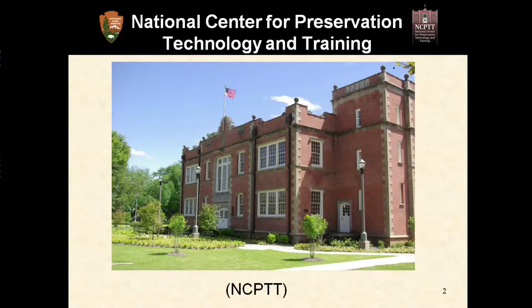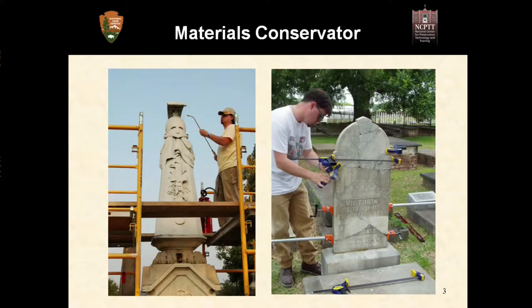The presentation today is coming from NCPTT — the National Center for Preservation Technology and Training. We are a cultural research and training office for the National Park Service. We don't look at fuzzy bears and bald eagles; we're interested in cultural resources. We look at historic buildings, historic landscapes, archaeological sites, architectural features, and collections. Very importantly, we look at materials research and materials conservation. I'm a materials conservator, and my specialty happens to be historic cemeteries.